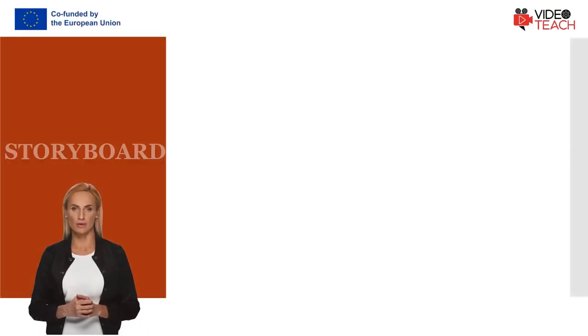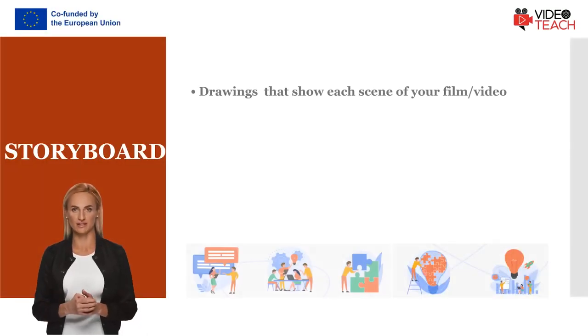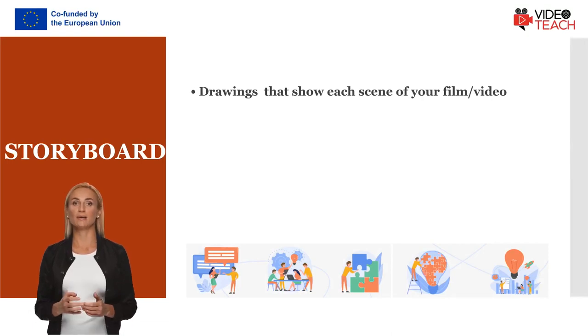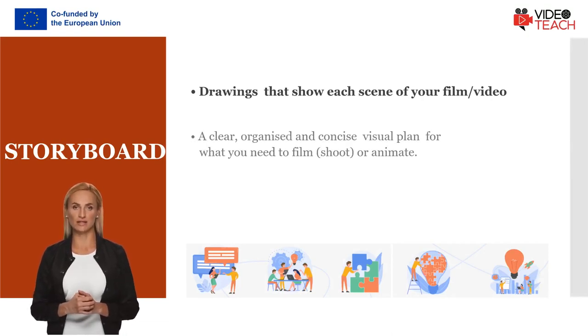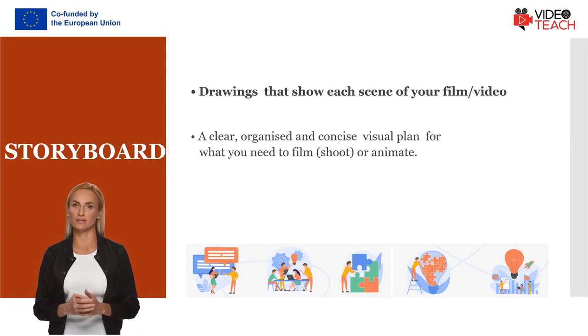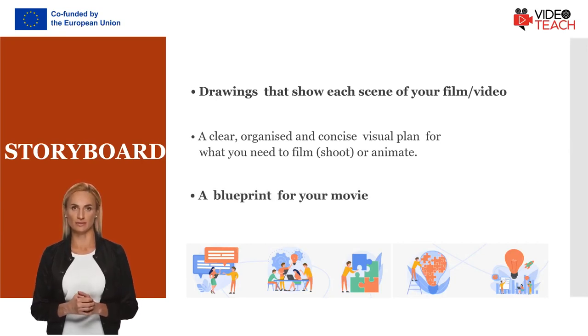A storyboard is a board consisting of drawings that show each scene of a video. It is a clear, organized, and concise visual plan for what you need to film or animate. It's essentially a blueprint for your video.